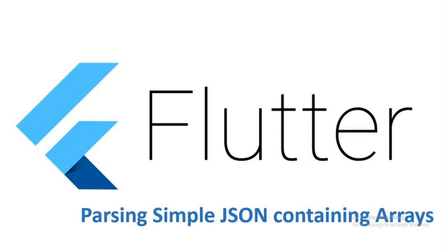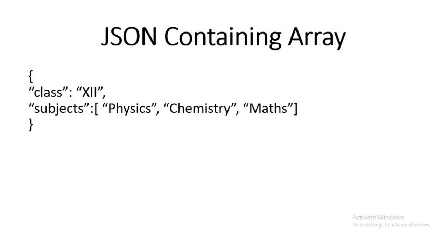Hi everyone. In this video we will be parsing JSON containing arrays. We will conquer a JSON structure that is similar to what we have done before, but instead of just a single value it might also have an array of values. As we can see, 'class' is a simple key-value pair as before, but 'subject' has an array of values containing physics, chemistry, and maths — multiple values contained in a list or array.